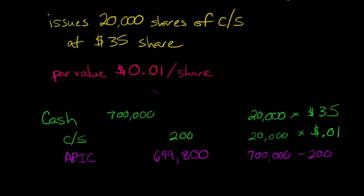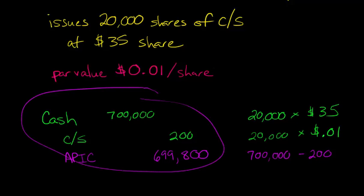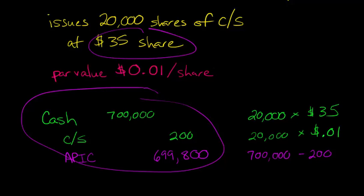And so this journal entry reflects what happened when the firm issued 20,000 shares of stock at a par value of one penny per share, and it actually received $35 a share.